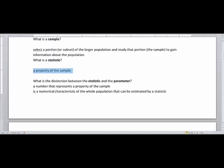Let's talk about the difference between a statistic and a parameter. A lot of people use these interchangeably, but there is a distinction. A statistic represents a property of the sample and the parameter is a numerical characteristic of the whole population that can be estimated by the statistic.